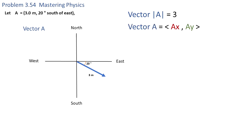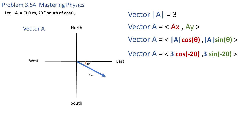As you can see, the magnitude of vector A is 3 meters. The horizontal component Ax is the magnitude of A times cosine of the angle, and the vertical component Ay is the magnitude of A times sine of the angle. So the x component is 3 cosine of negative 20, and the y component is 3 times sine of negative 20.